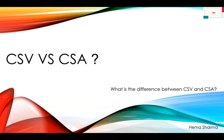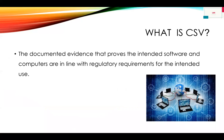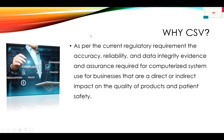So what is the difference between Computer System Validation and Computer System Assurance? As a reminder, CSV is the documented evidence that the intended software and computers are in line with regulatory requirements for the intended use. Any electronic system or computerized system — including your network, computer, keyboard, mouse, and all software — this combination is known as a computerized system. You have to prove with documented evidence that all systems used for electronic data generation and restoration meet regulatory requirements. As per the current regulatory environment, accuracy, liability, and data integrity evidence and assurance are required.